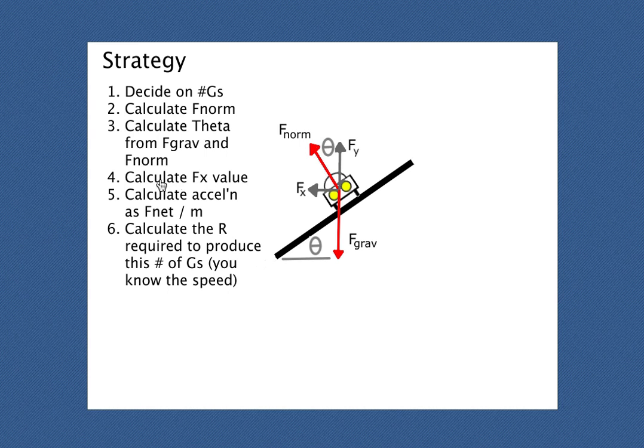Once I get the value of theta, I can calculate the value of fx. Because after all, this fx value is a horizontal side of the same triangle. I can either use a tangent, a cosine function, or a sine function, or just Pythagorean theorem to do this at this point. So calculate your fx value. And this fx value is the net force. It's the part of the forces that don't get balanced. So calculate the acceleration as f net over m.